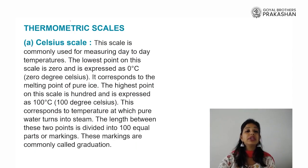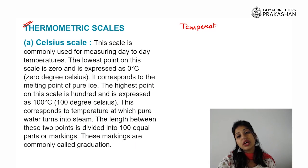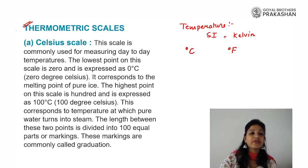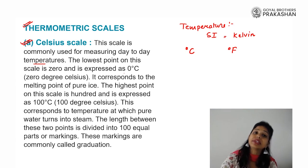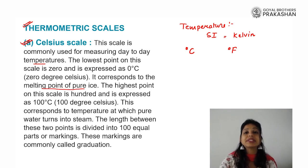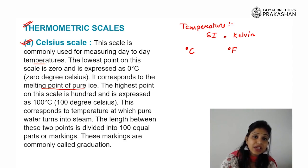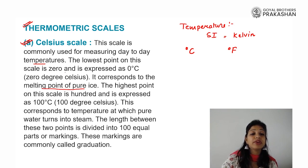Now let's talk about the three different types of thermometric scales. The SI unit of temperature is Kelvin. The first scale is the Celsius scale, which is commonly used for measuring day-to-day temperatures. The lowest point on this scale is 0 degrees Celsius, which corresponds to the melting point of pure ice. Water starts freezing at 0 degrees Celsius, and ice starts melting at 0 degrees Celsius as well — so 0 degrees Celsius is referred to as the melting point of pure ice.